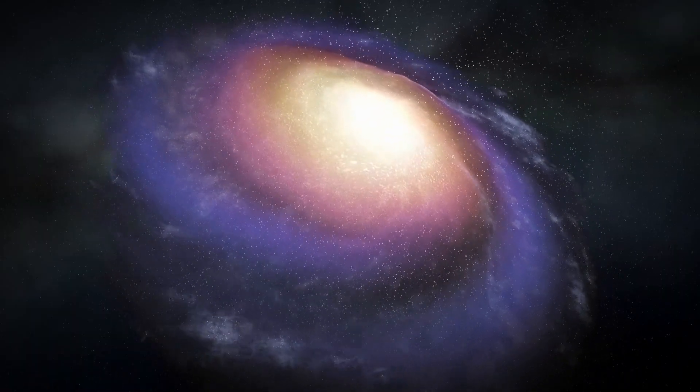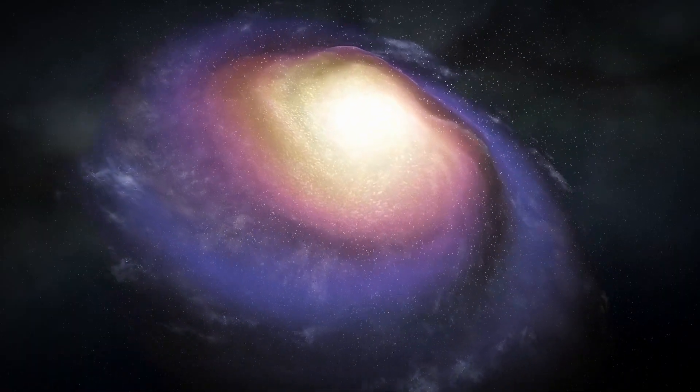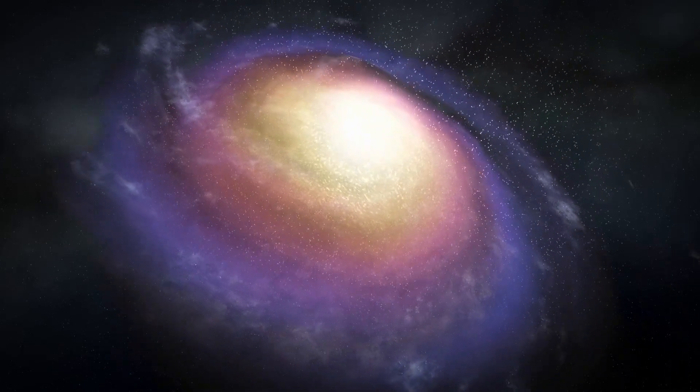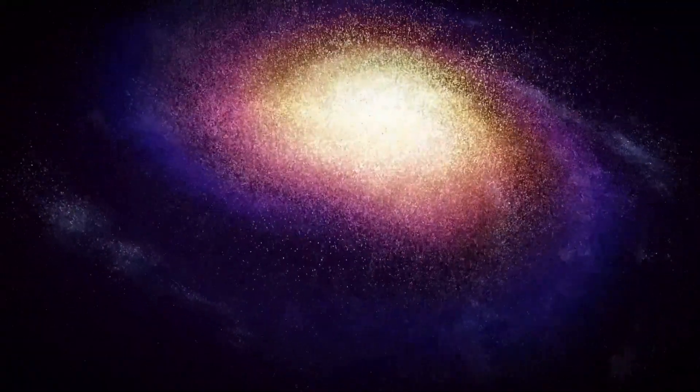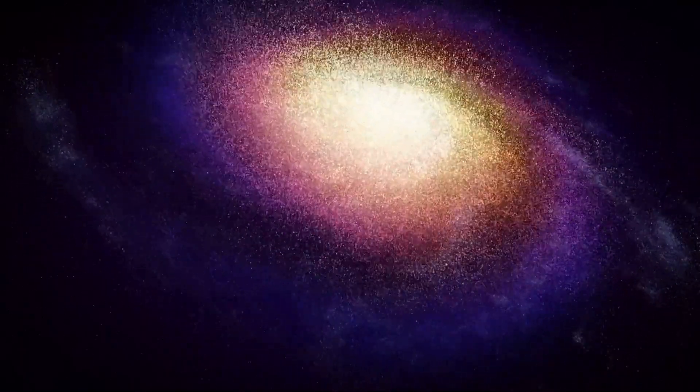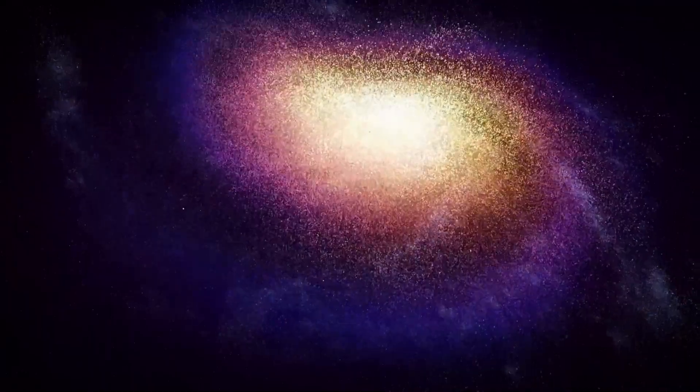Proxima Centauri b does not traverse its cosmic path alone. It shares its orbit with the super-Earth Proxima Centauri c. Together they circle their red dwarf star, raising questions about what other secrets the stellar neighborhood might be hiding.